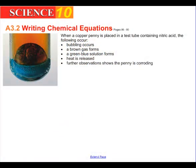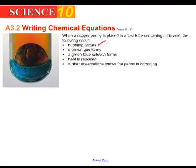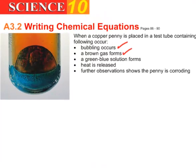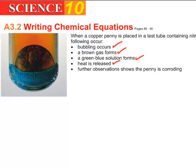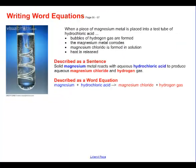Let's look at how we write a chemical reaction in the form of a chemical equation. If we take a copper penny and put it into a test tube containing nitric acid, the following things occur: we get some bubbling, we see a brown gas, there's a blue-green solution, heat is released, and the penny is corroding. A chemical reaction is clearly taking place. How do we write that down and collect that information?